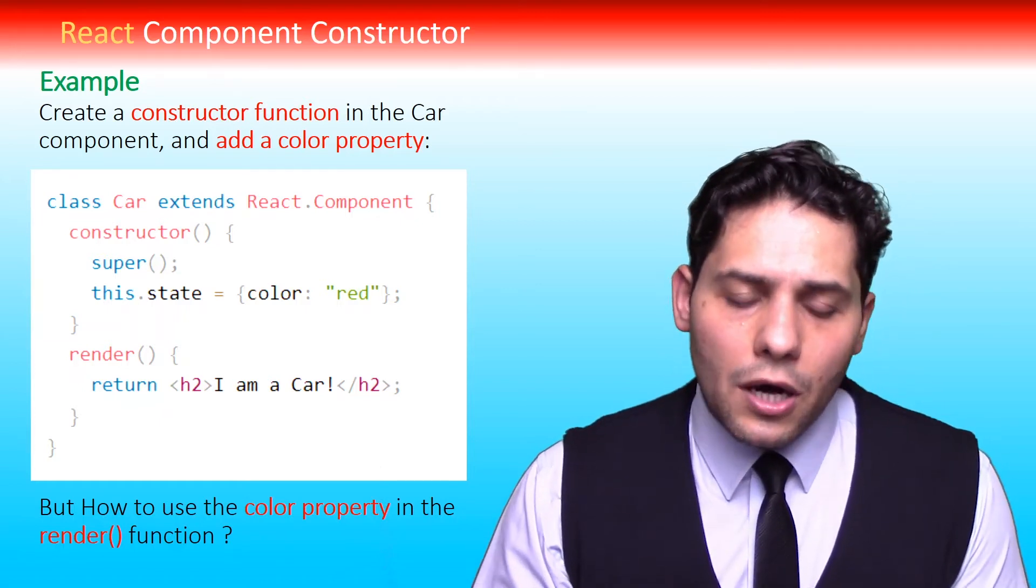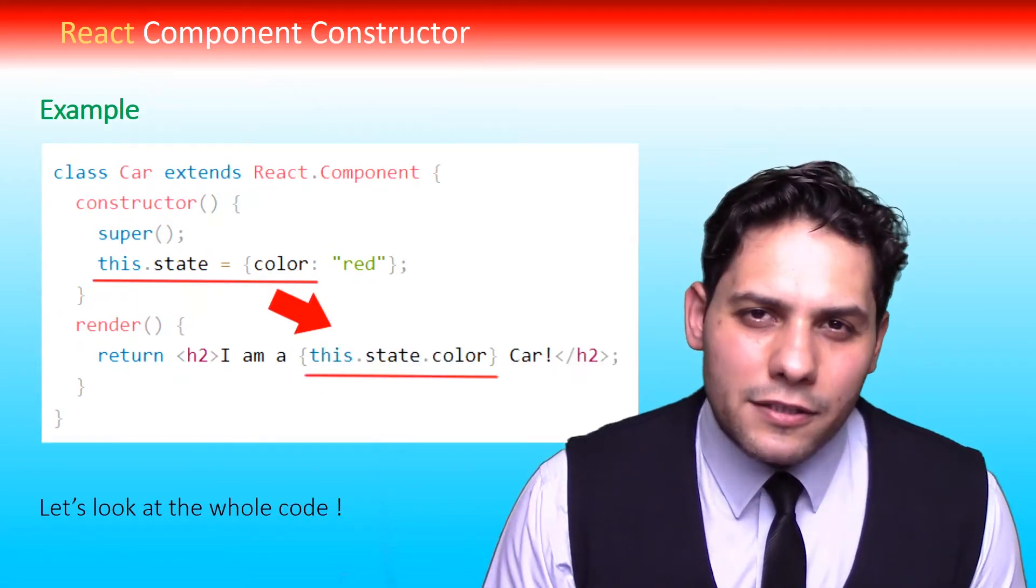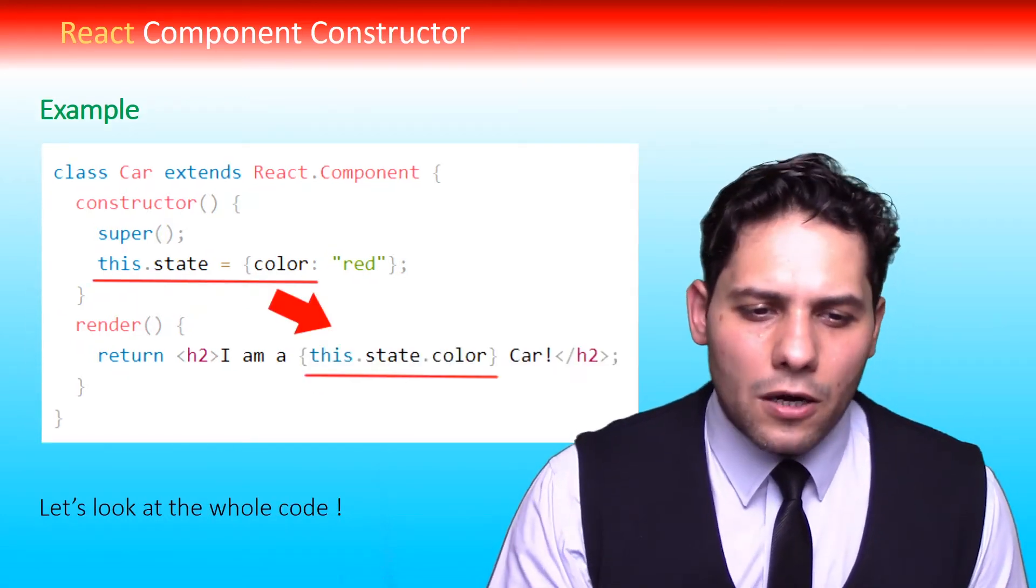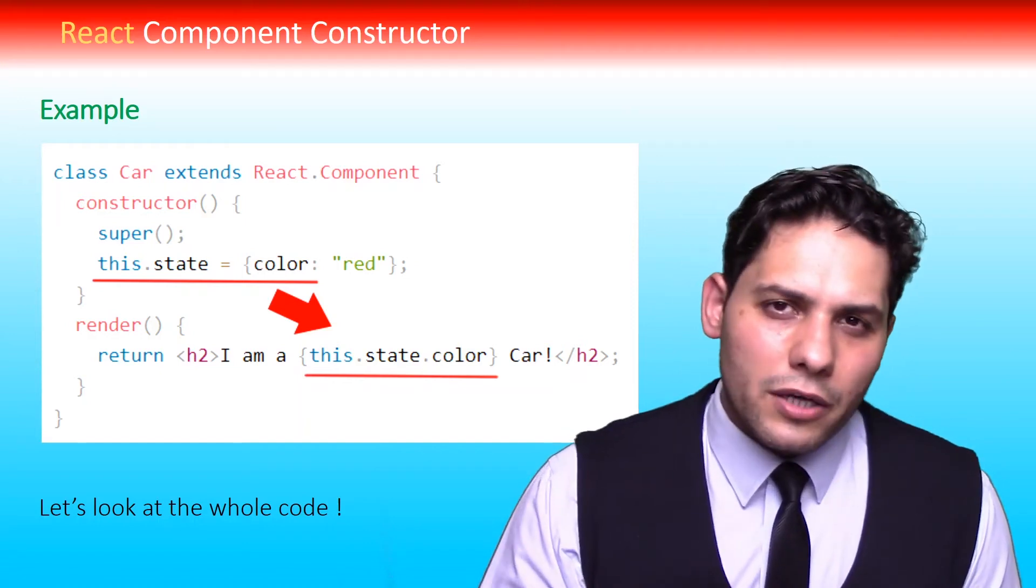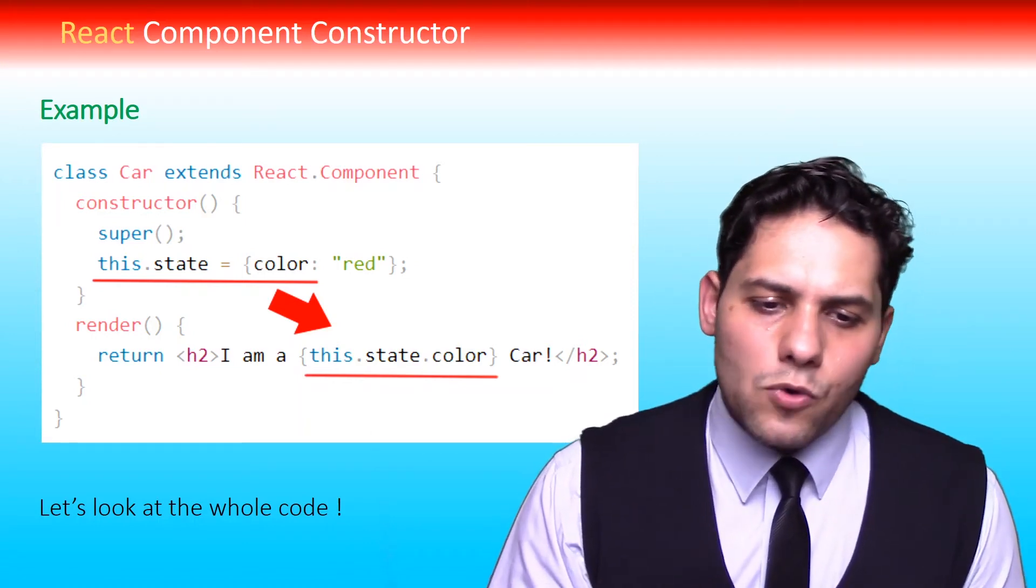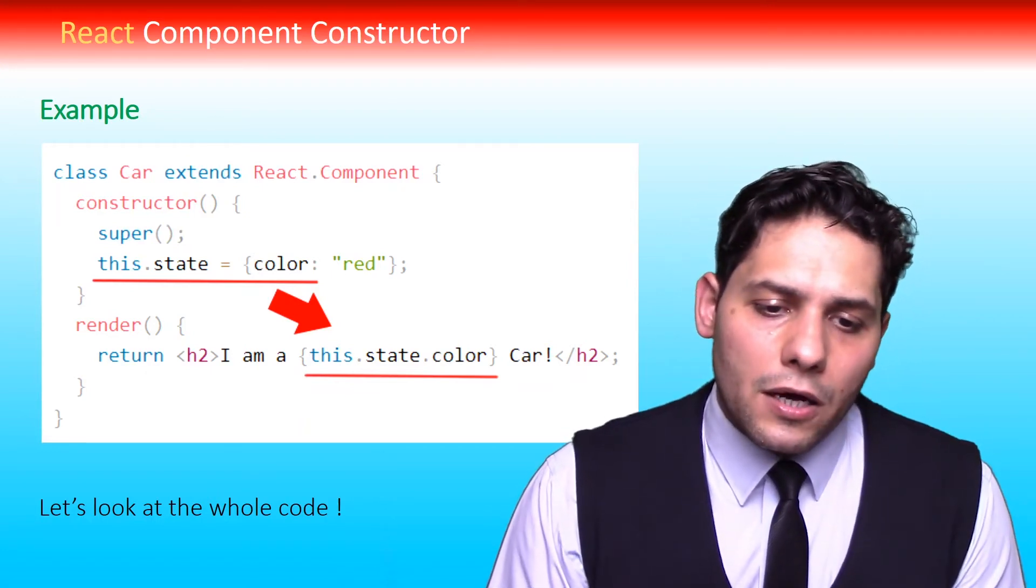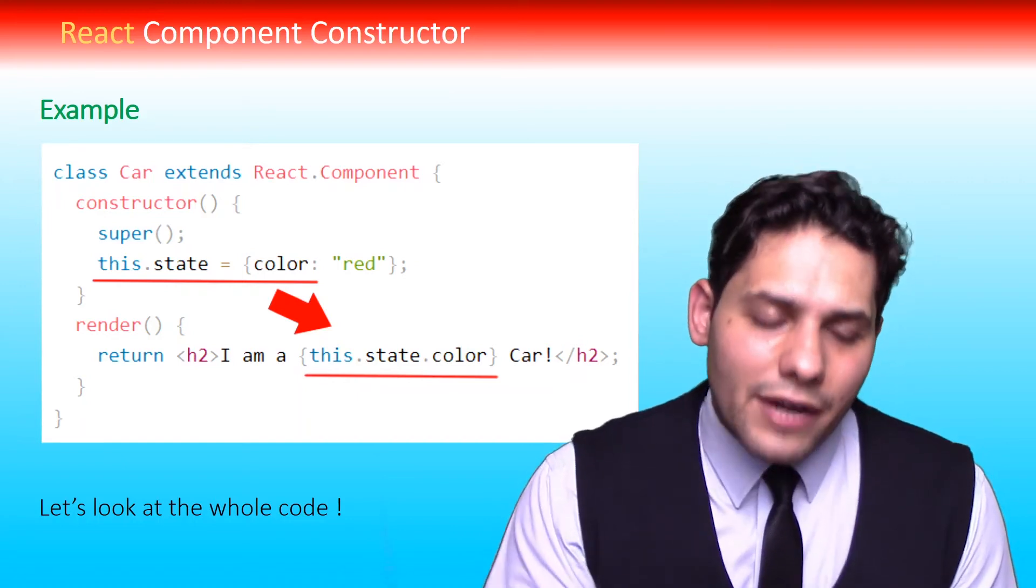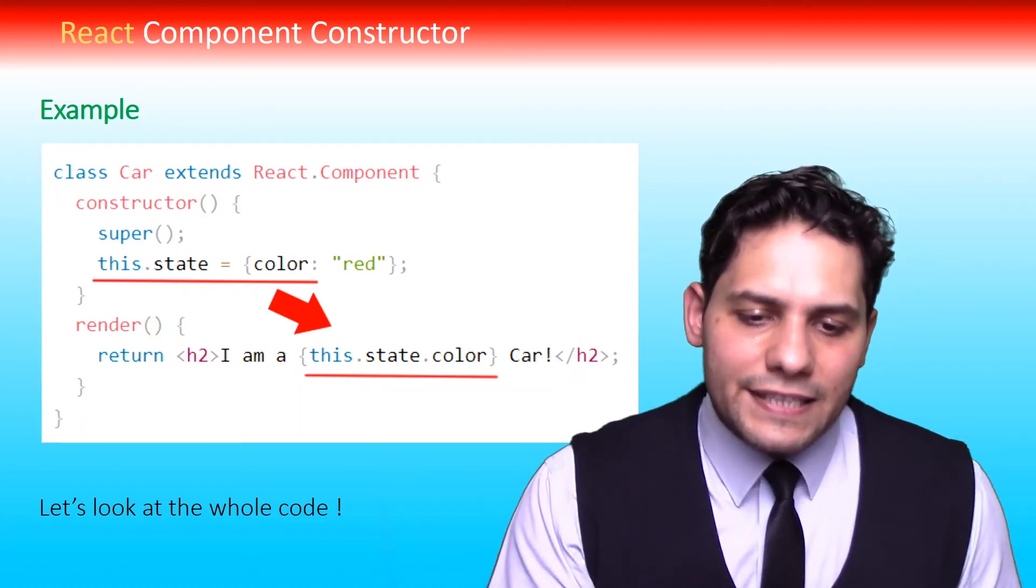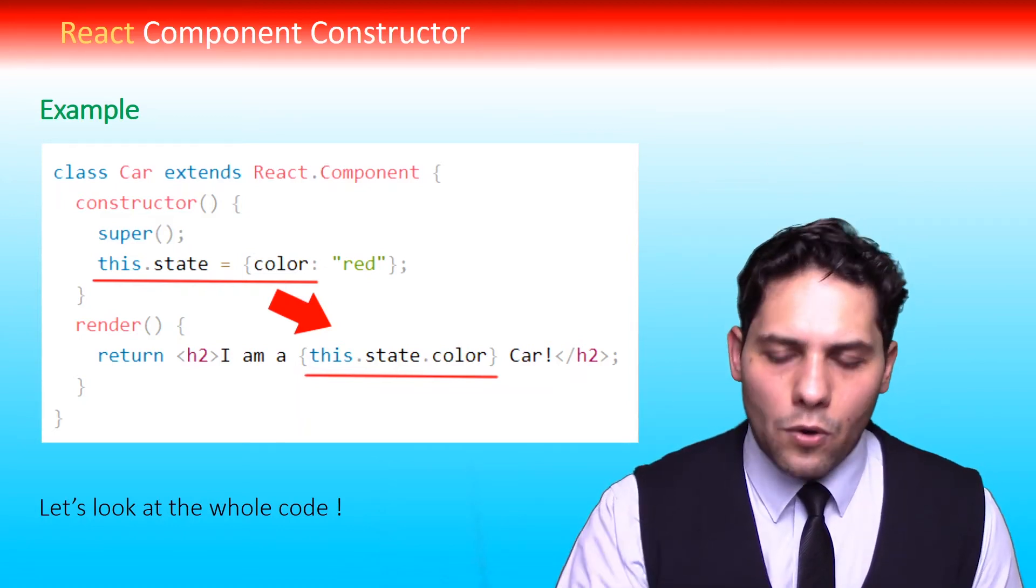But how to use the color property in the render function? Please look at this code carefully. In this Car component, after defining constructor and super, and initiating the value of property - our property is color and adding red to it - for using it in render, just we type this.state.color. Let's look at the whole code.